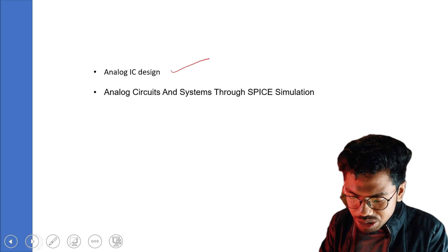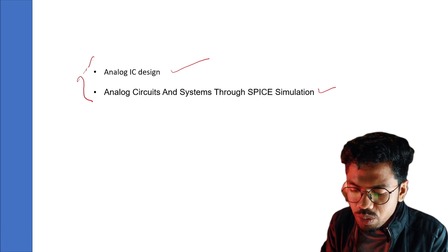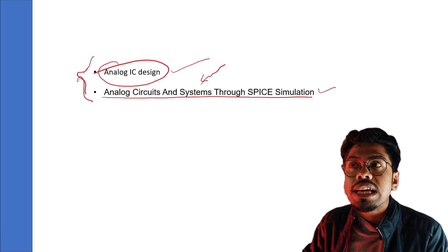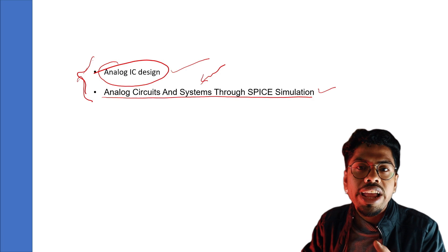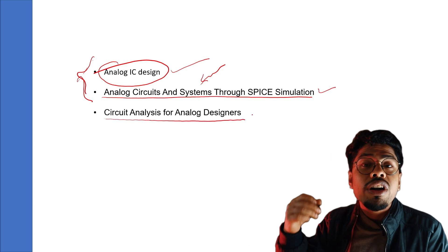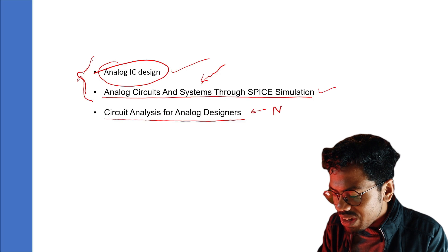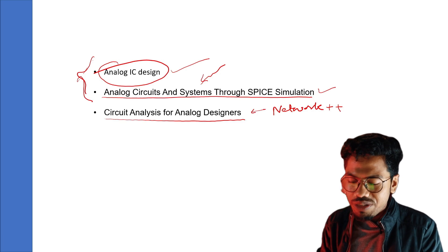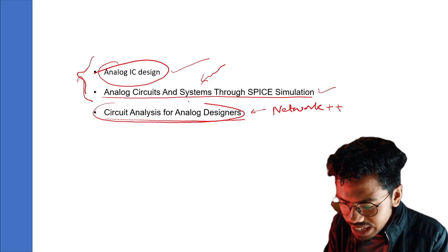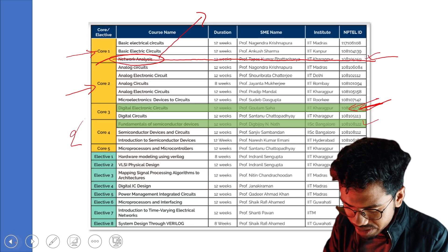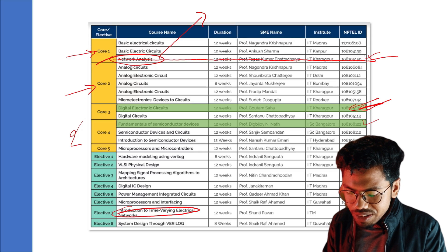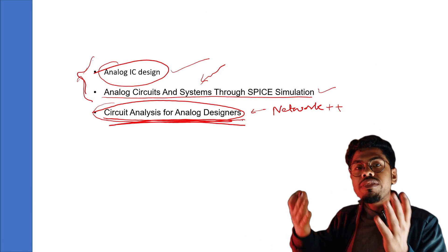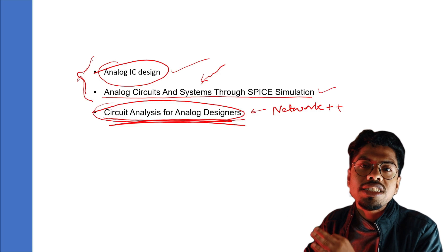Analog IC Design is a tougher course, but more challenging courses make you more skillful. You can register for Analog IC Design and complement it with another course that covers SPICE simulation, giving you great hands-on experience with EDA tools. For analog engineers, there's also an advanced network course that builds upon the basic electrical network from BTech. It's very similar to Time-Varying Electrical Networks — if that course isn't live next semester, take this one first.